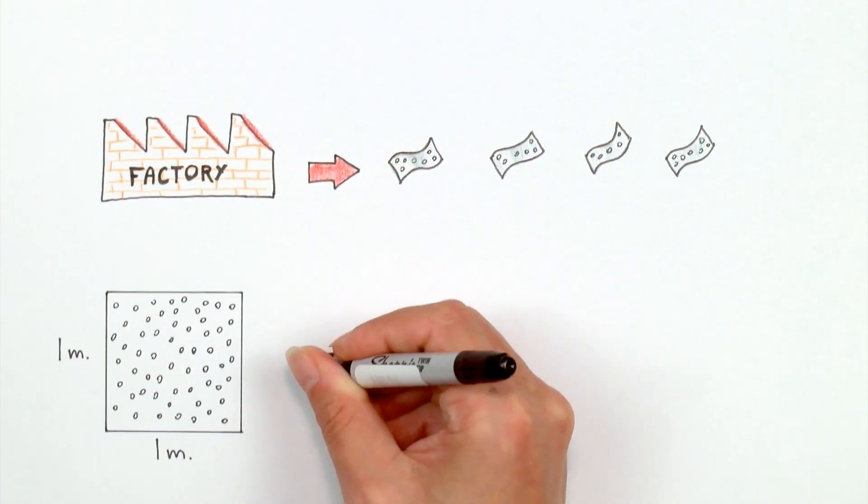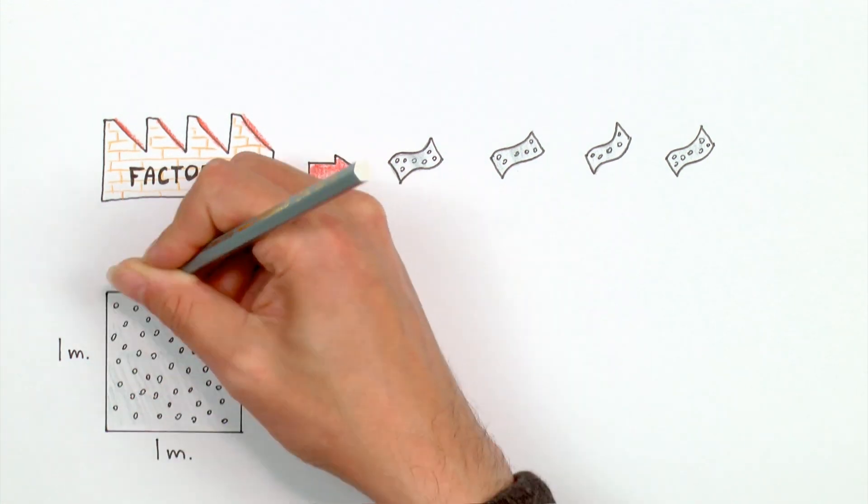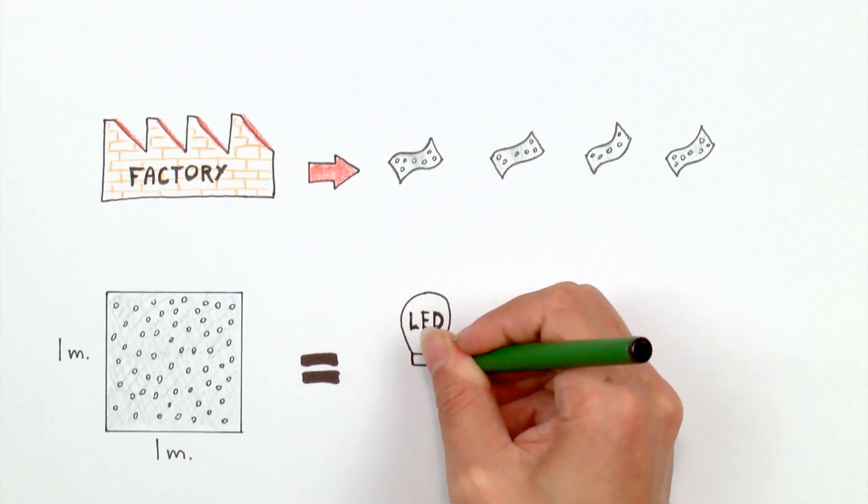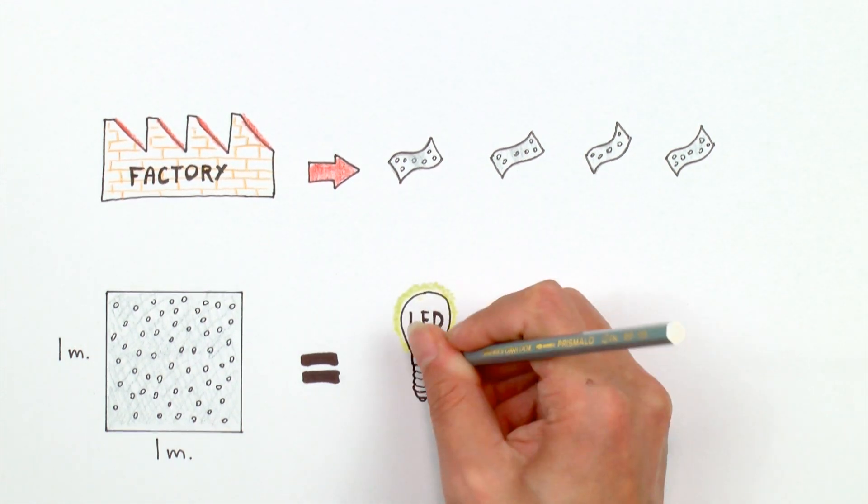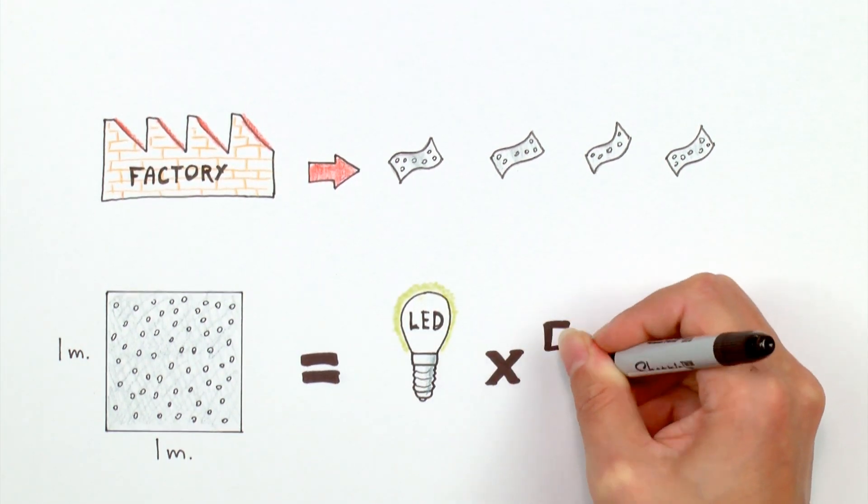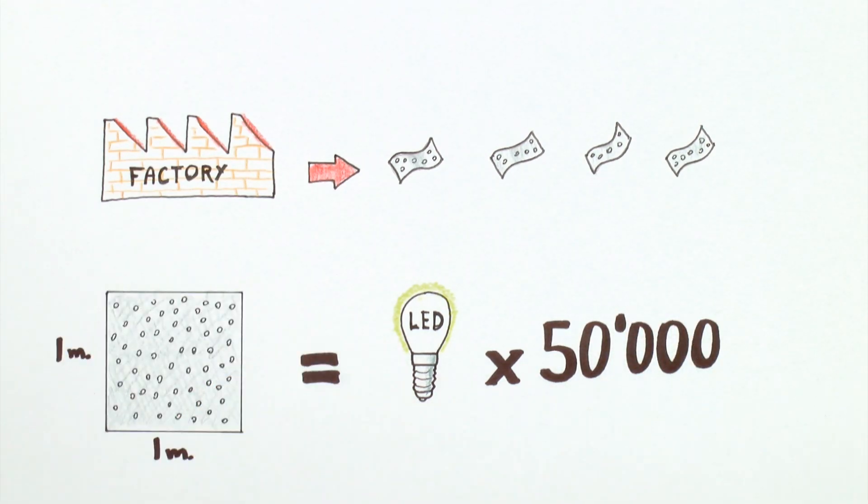Theoretically, the maximum yield of the device is impressive. For a membrane that is one square meter, and with only 30% of its surface covered with nanopores, we could reach 1 megawatt, enough to run 50,000 standard energy-saving light bulbs.